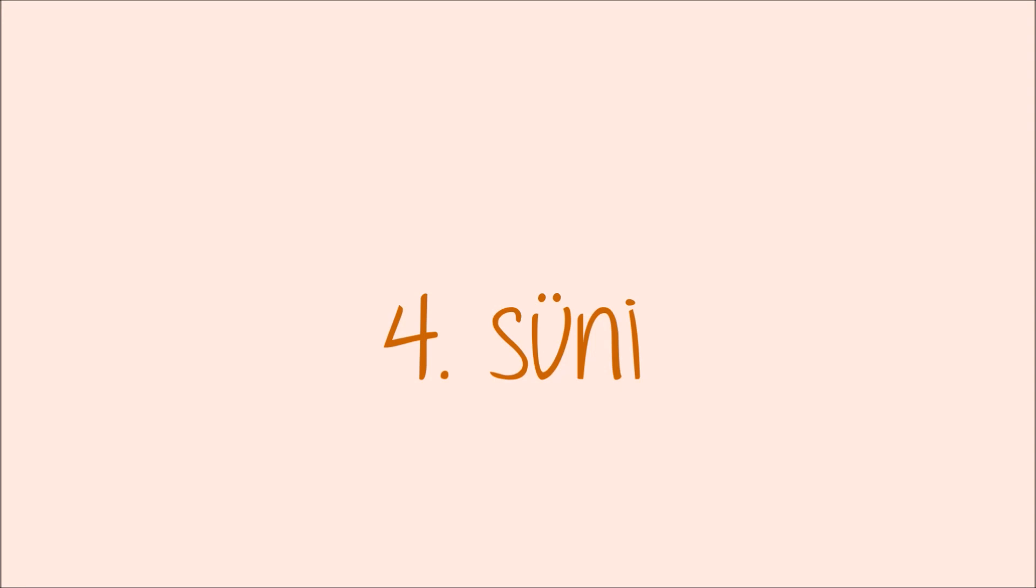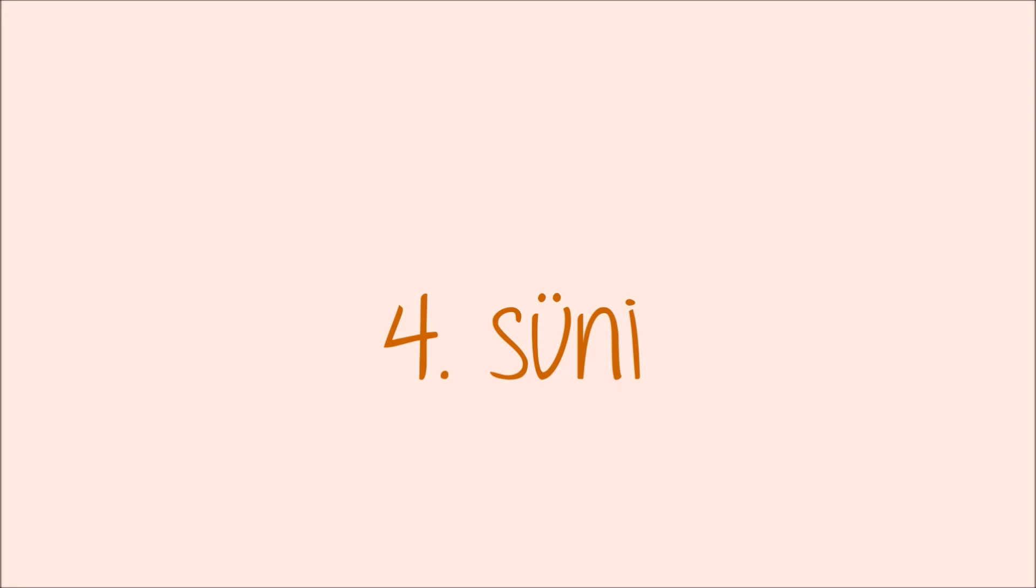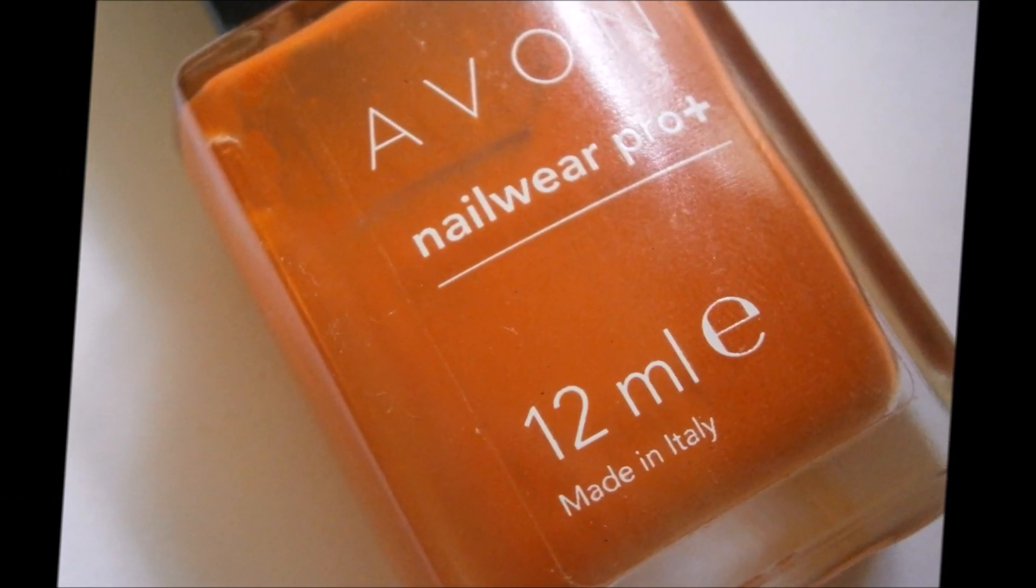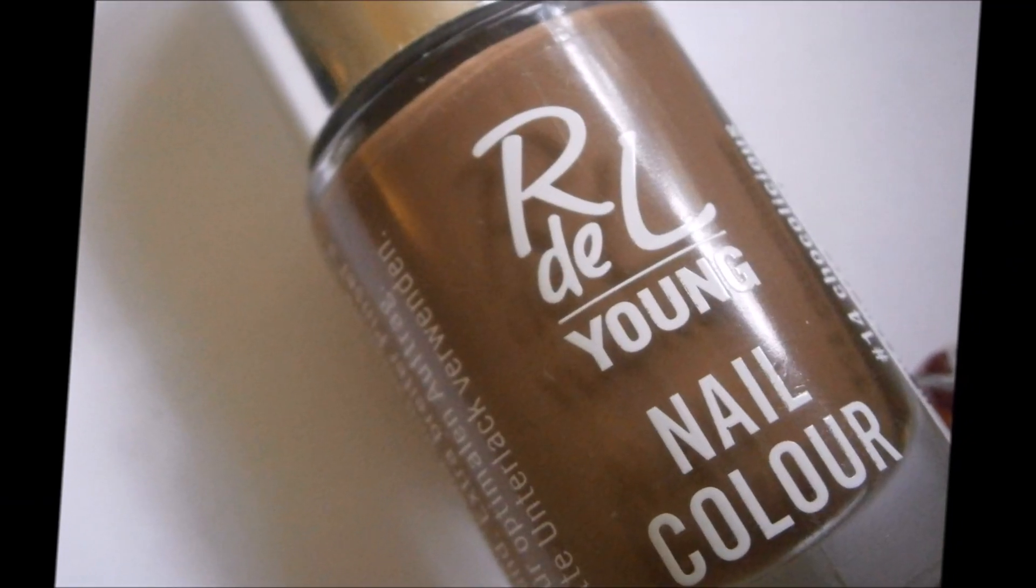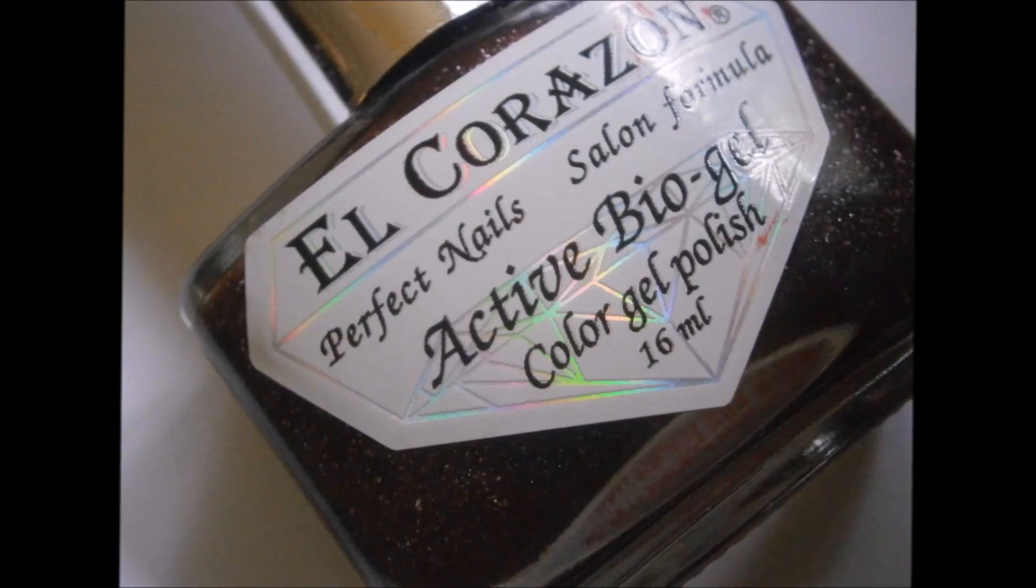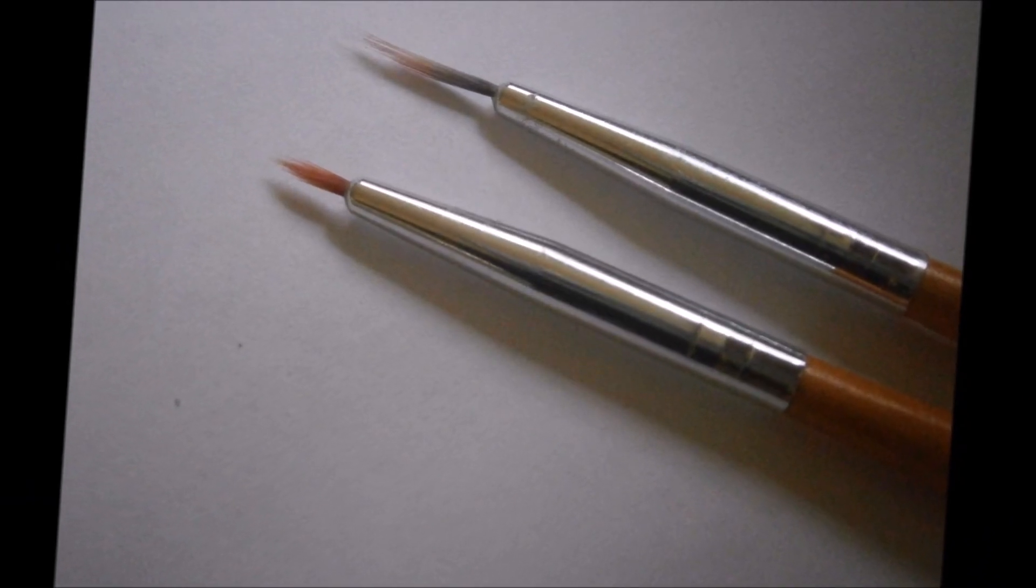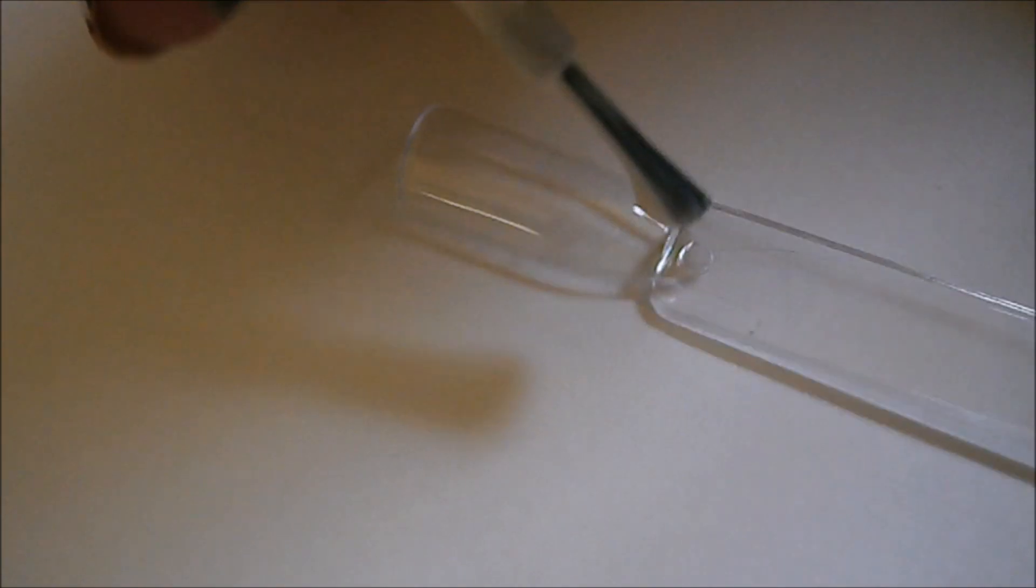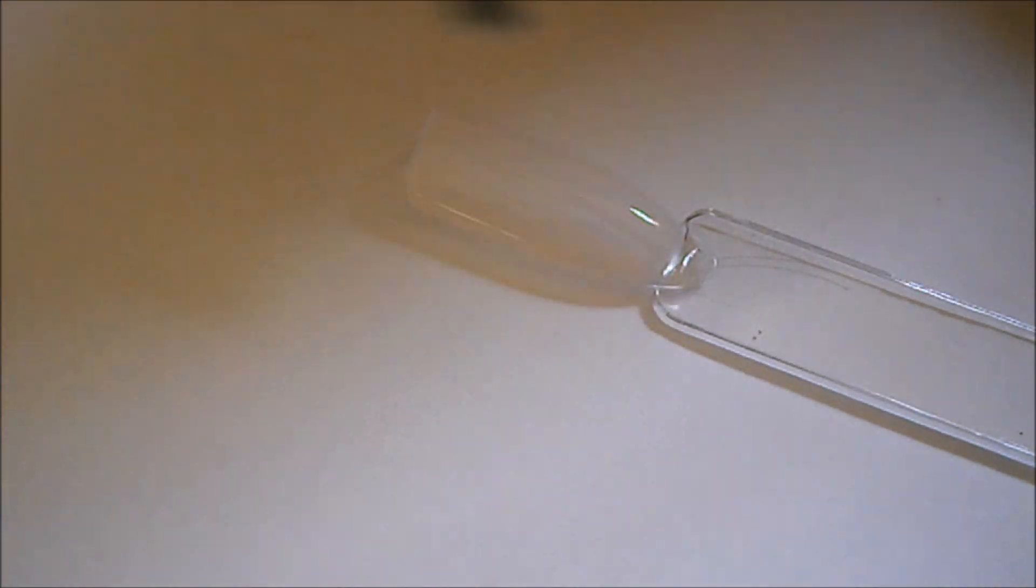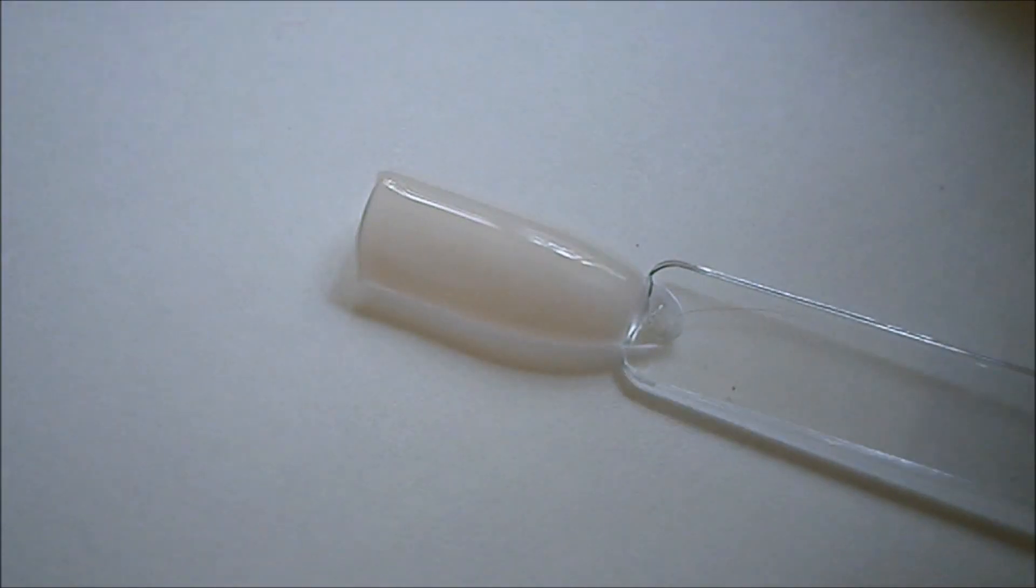A sünis manikűrhöz egy nagyon világos nőd színű körömlak lesz az alapunk. Majd kell egy kicsit sötétebb nőd, egy narancsárga, kettőféle barna, sárga, zöld és fekete körömlakkok. Vékony ecsetre és kis fejű pontozóra is szükségünk lesz. Elsőként a nagyon világos nőd alapot viszem fel a körmömre. Ez fehér is lehet, én ősszel annyira nem szeretem a fehéret.